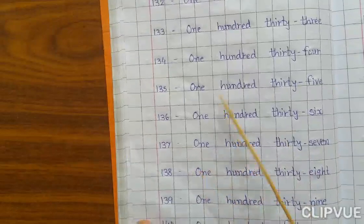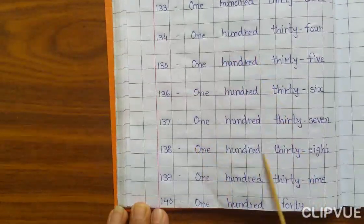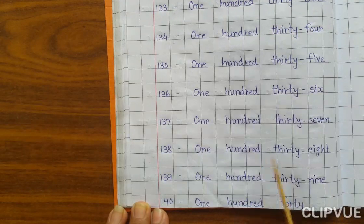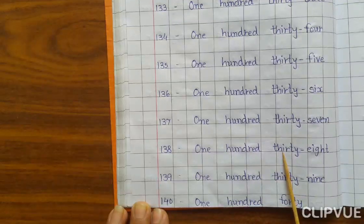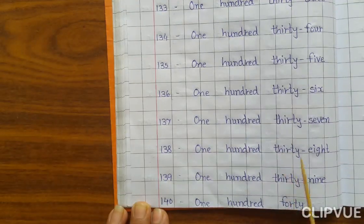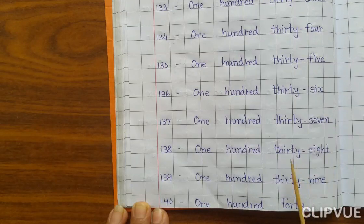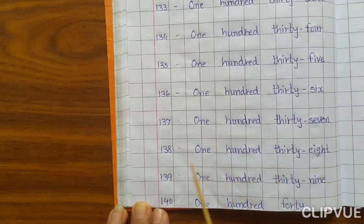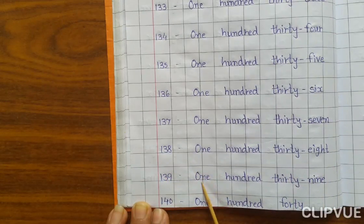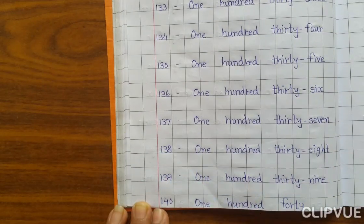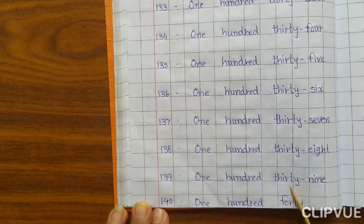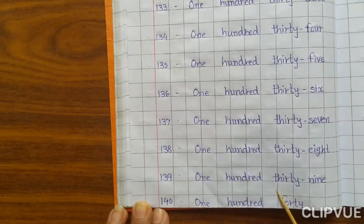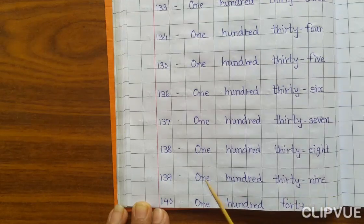138 — O-N-E 1, H-U-N-D-R-E-D 100, T-H-I-R-T-Y-E-I-G-H-T 38. 138. 139 — O-N-E 1, H-U-N-D-R-E-D 100, T-H-I-R-T-Y-N-I-N-E 39. 139.